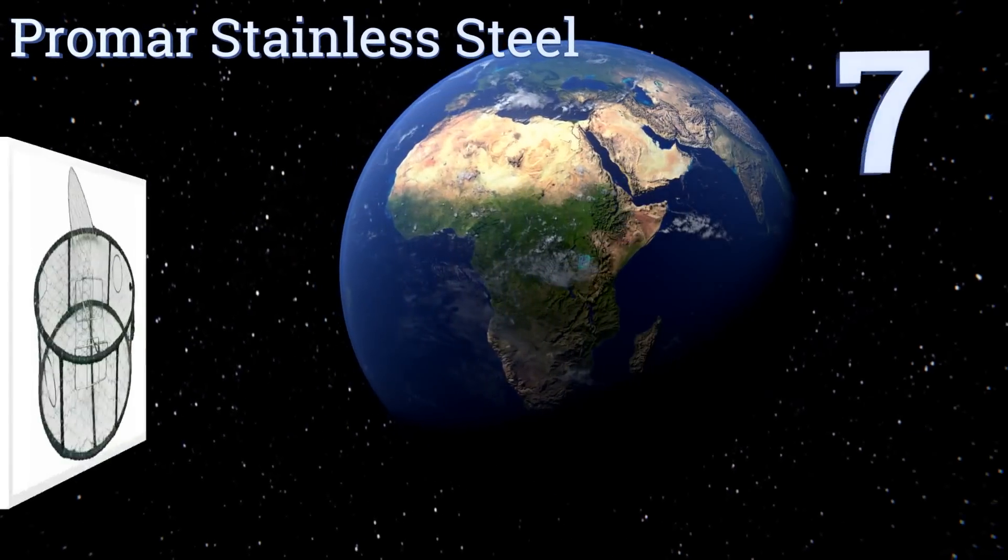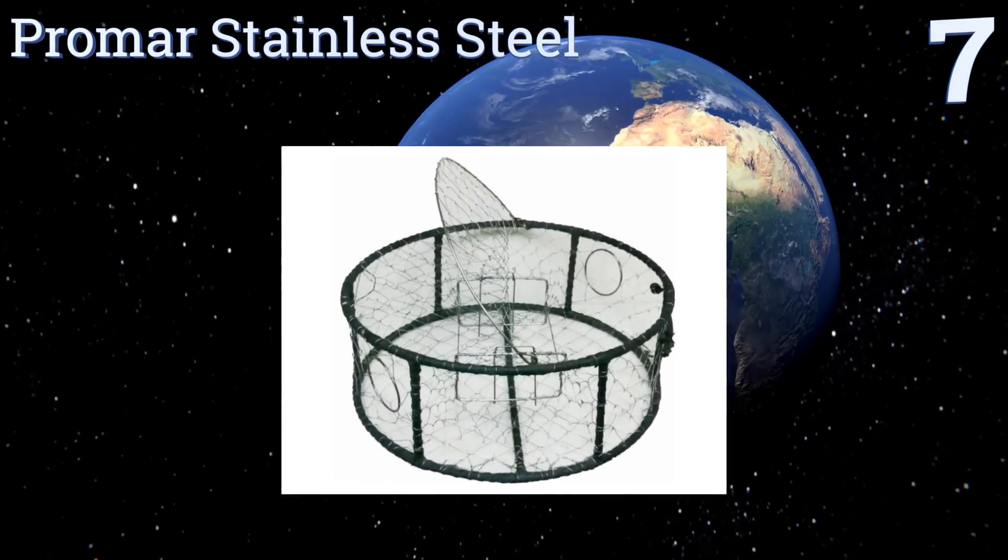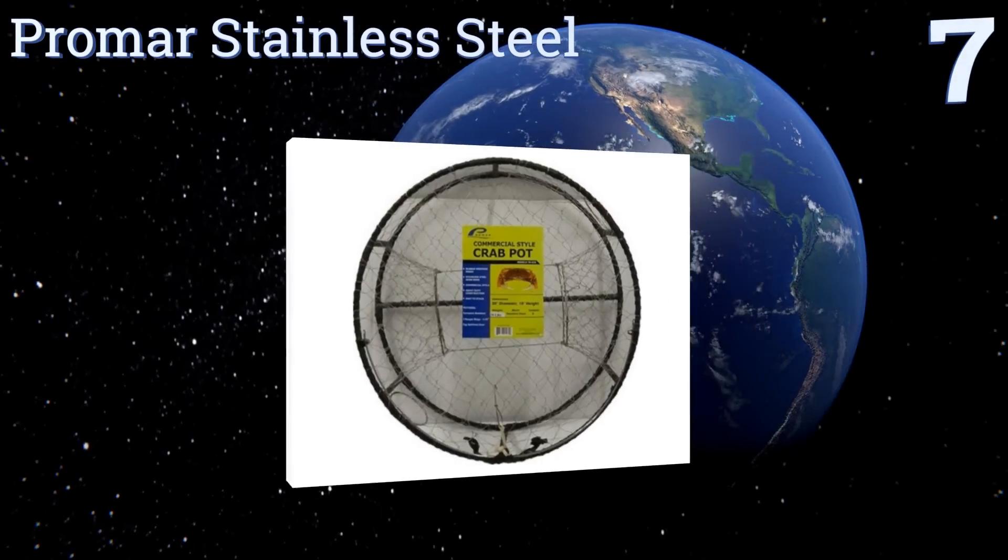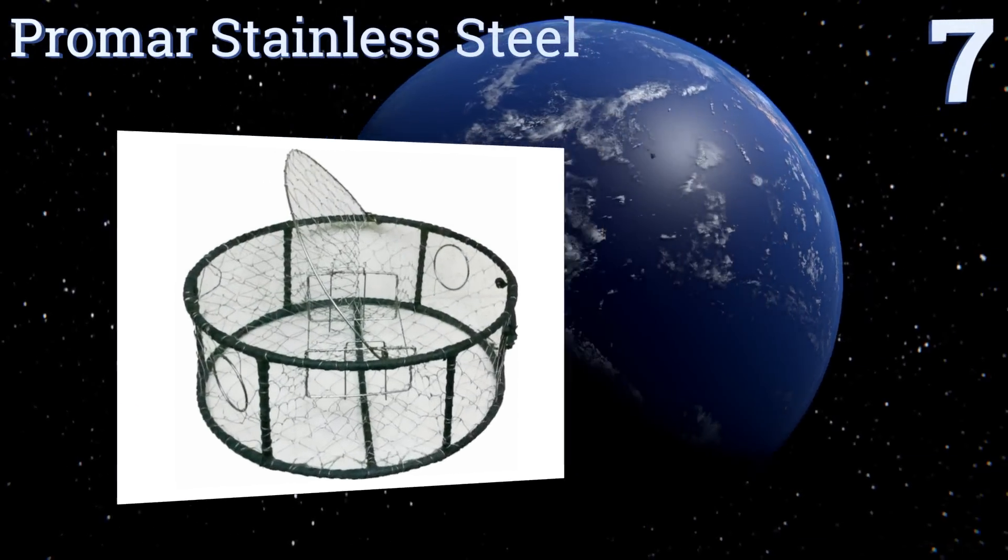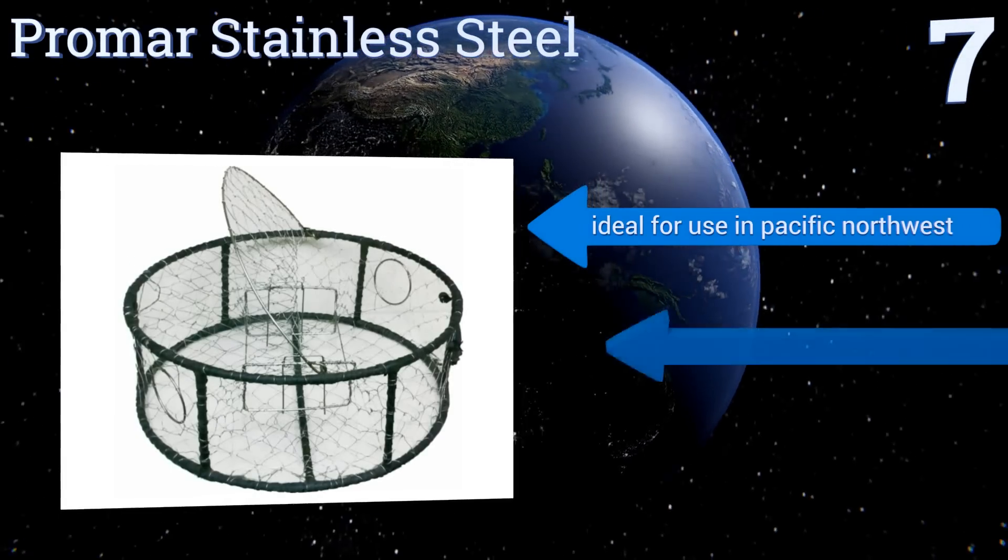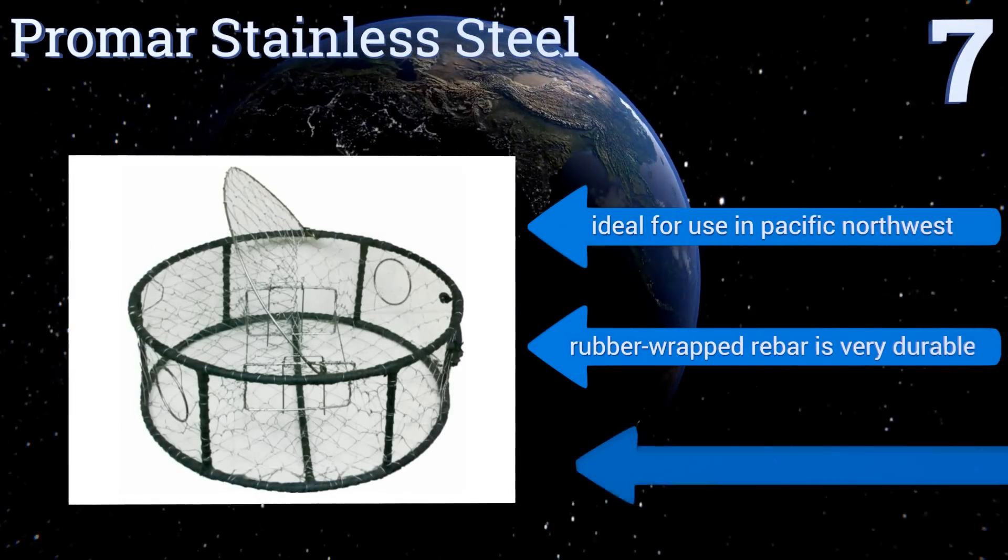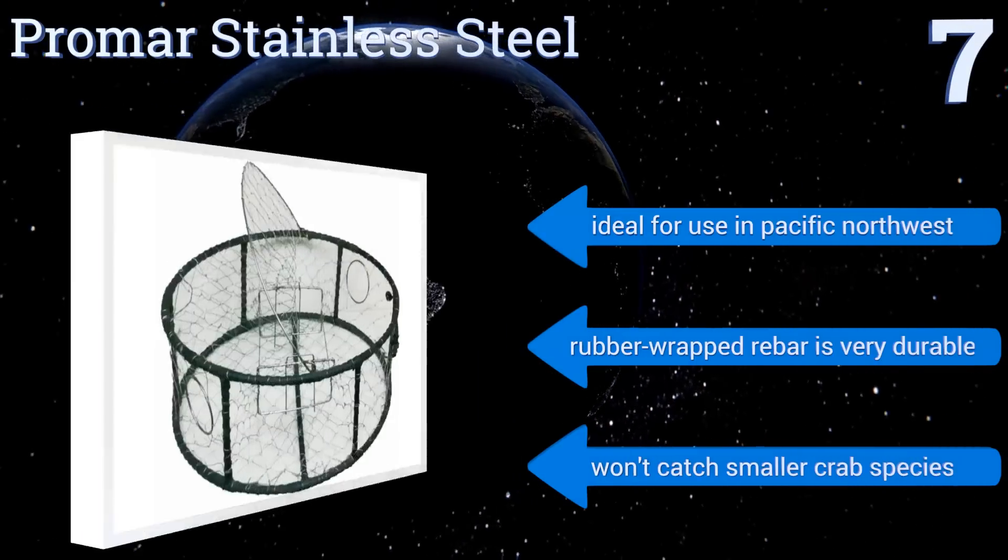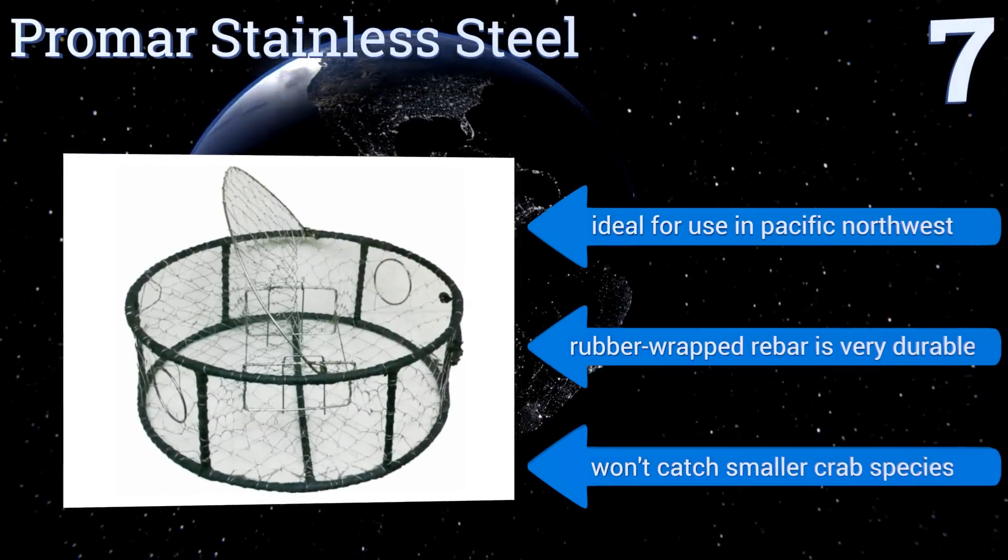At number seven, the Promar stainless steel is very heavy, so it's good if you're fishing in an area with strong currents. It's tough enough to handle long soaks, so if you can't get to your pot right away this is a good choice. The weight does put a strain on your back though. It's ideal for use in the Pacific Northwest and its rubber wrapped rebar is very durable, but it won't catch smaller crab species.